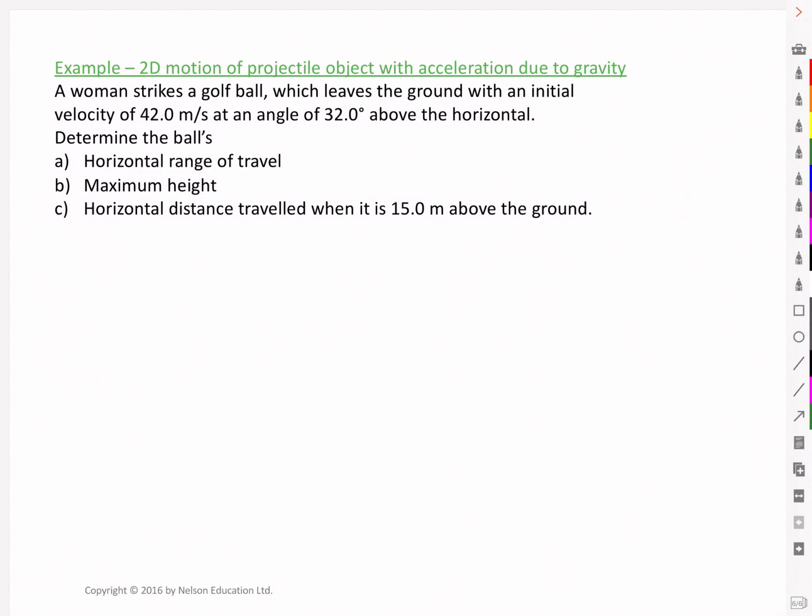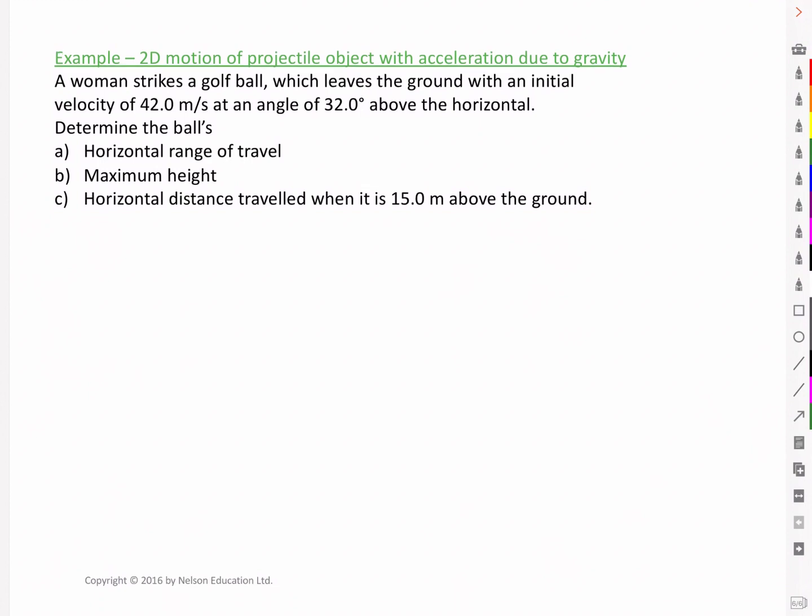Hello class, here's an example looking at 2D motion of a projectile object with acceleration due to gravity. A woman strikes a golf ball which leaves the ground with an initial velocity of 42 meters per second at an angle of 32 degrees above the horizontal. Determine the ball's horizontal range of travel, maximum height, and the horizontal distance travelled when it is 15 meters above the ground.